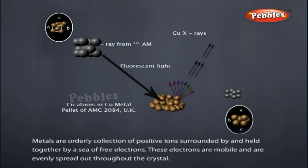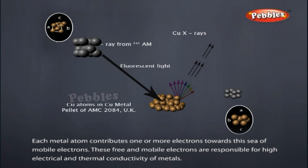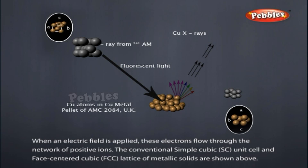Metallic solids. Metals are an orderly collection of positive ions surrounded by and held together by a sea of free electrons. These electrons are mobile and are evenly spread out throughout the crystal. Each metal atom contributes one or more electrons towards this sea of mobile electrons. These free and mobile electrons are responsible for high electrical and thermal conductivity of metals. When an electrical field is applied, these electrons flow through the network of positive ions. The simple cubic unit cell and face-centered cubic lattice of metallic solids are shown above.